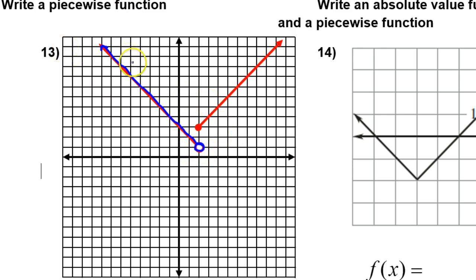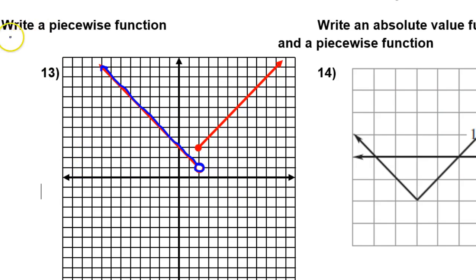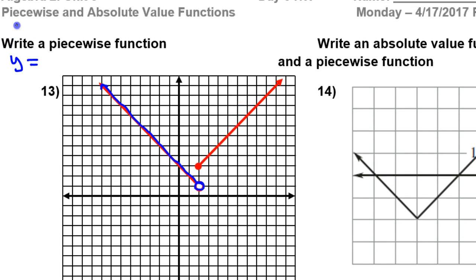I need an equation for the line that goes through this blue part. I'm thinking of y equals mx plus b — the slope-intercept form of a line. So I need the slope of this line.